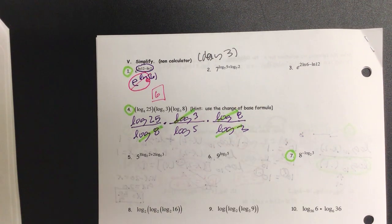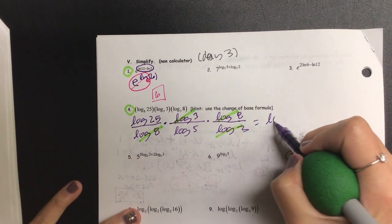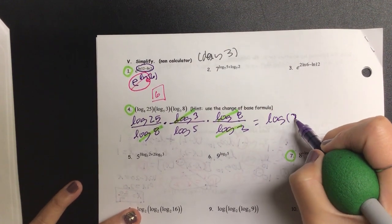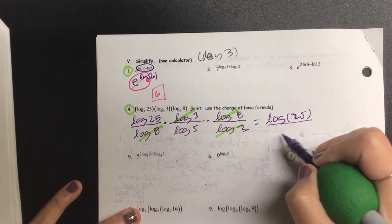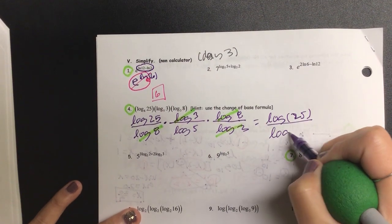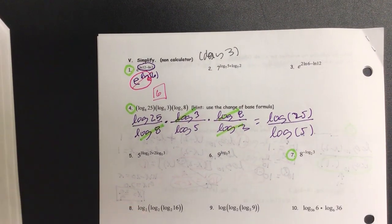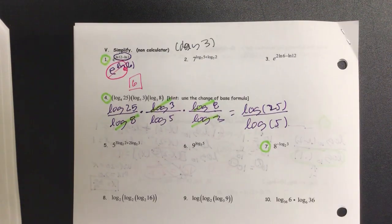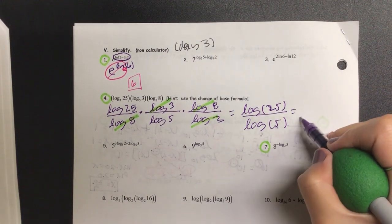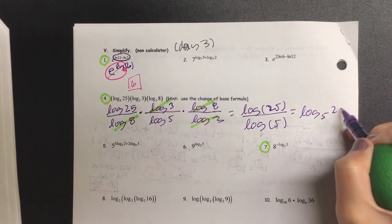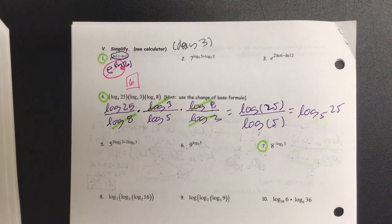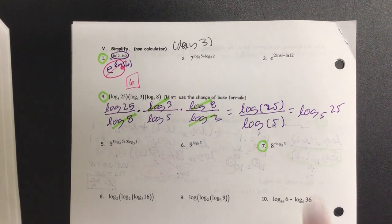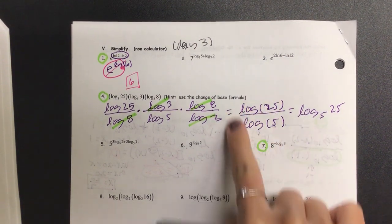So we have remaining of the following. We have log of 25 over log of 5. Can I just leave it like that? Can I also write it as this though? Can I say log of base 5 of 25, then? Yeah? Because that would be the change of base formula to this one.